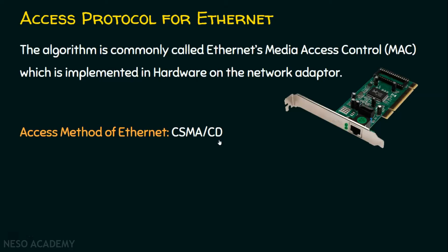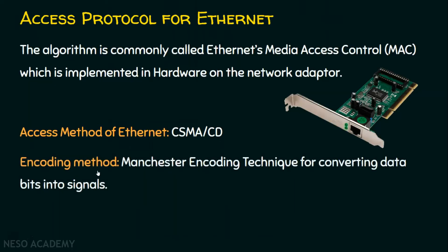If you want to know more about it, I request you to watch my previous lecture titled 'Carrier Sense Multiple Access.' The encoding method used by Ethernet is the Manchester encoding technique. The frames created by the host computer have to be placed on the cable, which requires encoding — converting data bits into electrical signals, because the Ethernet copper cable carries data in the form of electrical signals. Ethernet uses Manchester encoding for this conversion.